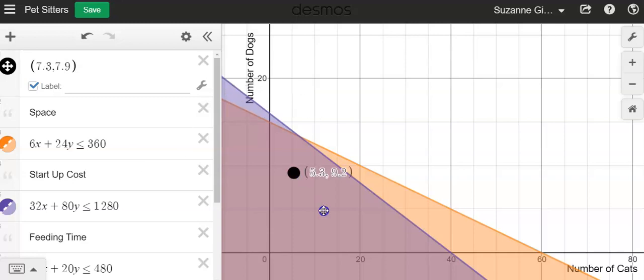So the part that's in the middle where both of the inequalities are shaded, this represents the solution to the system of inequalities. So the double shaded region.